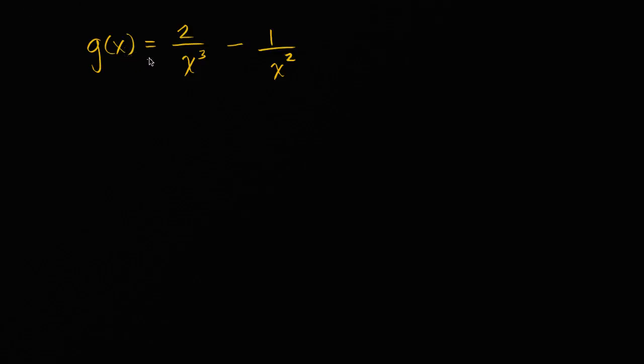So we have the function g of x, which is equal to two over x to the third minus one over x squared. And what I want to do in this video is I want to find, I want to figure out what g prime of x is, and then I also want to evaluate that at x equals two. So I want to figure that out, and I also want to figure out what does that evaluate to when x is equal to two?